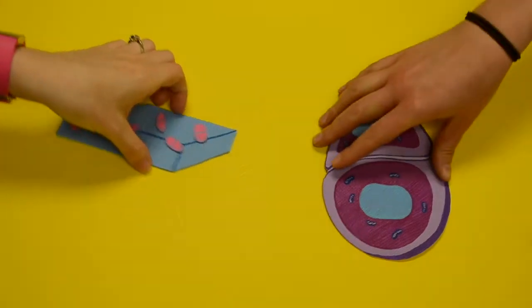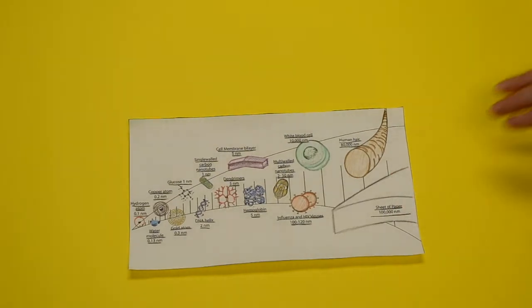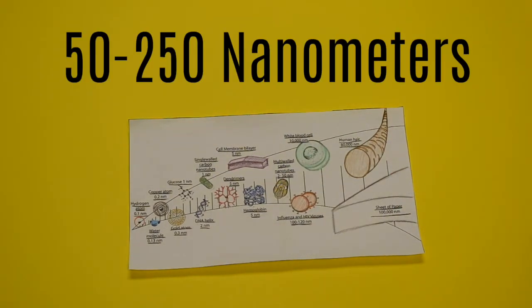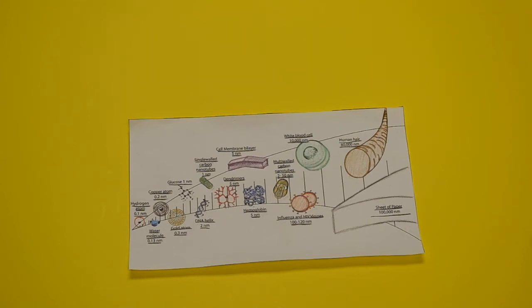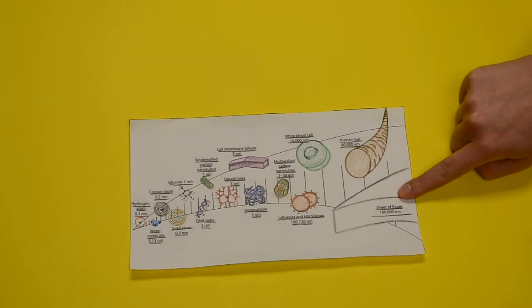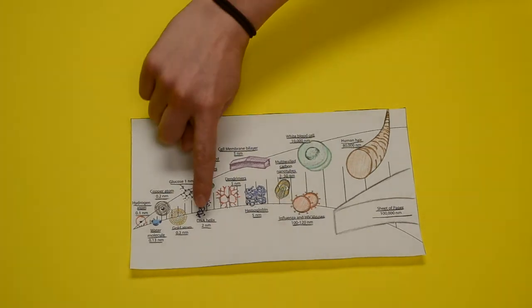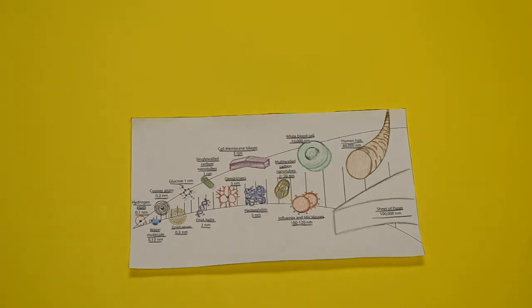Chondrocytes vary in shape, number, and size depending on their anatomical region in the cartilage. Chondrocytes are small and tend to be 50 to 250 nanometers. A nanometer is one billionth of a meter. For reference, a sheet of paper is 100,000 nanometers thick, whereas a strand of human DNA is two and a half nanometers in diameter.